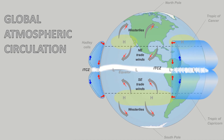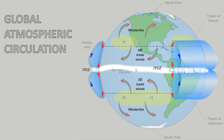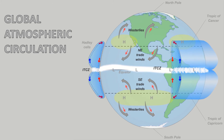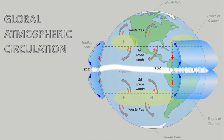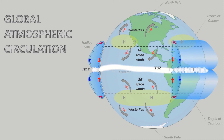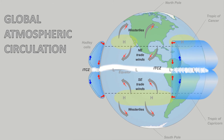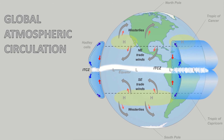The rising air, having lost its moisture at the equator, migrates north and south, where it descends at around 30 degrees north and 30 degrees south. This dry descending air creates a band of high pressure that drives air back toward the equator and north into the middle latitudes, creating the westerlies.